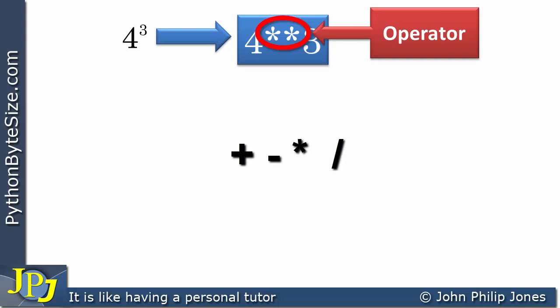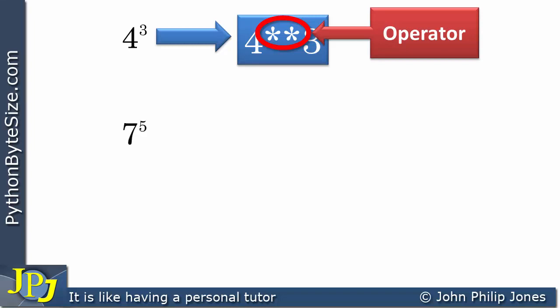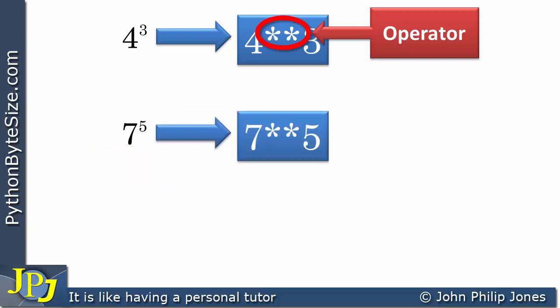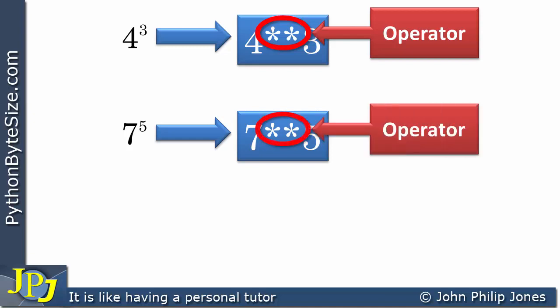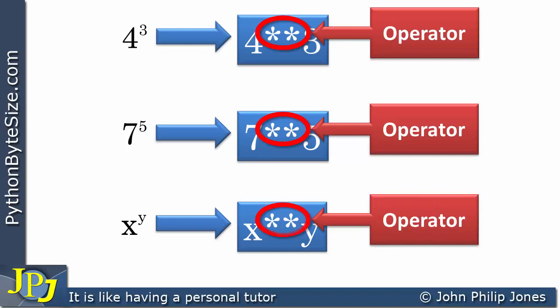Addition, subtraction, multiplication, and division, together with the power operator, are all built into Python. Another example is 7 raised to the power of 5, where the index is 5 — written in Python as 7 ** 5. In the general case, x raised to the power of y (where y is the index) is written in Python as x ** y.